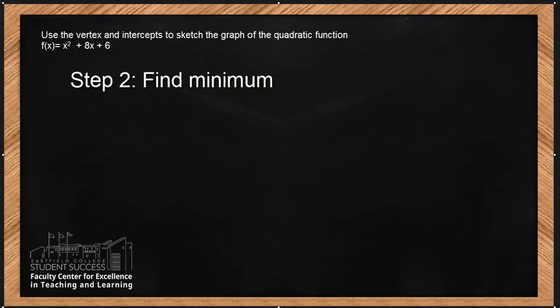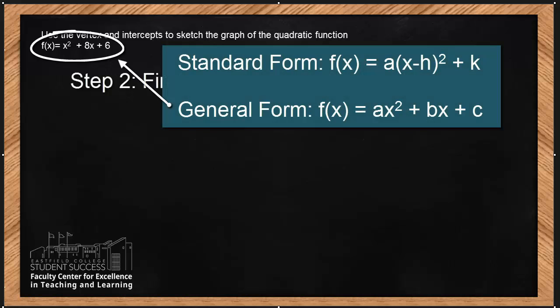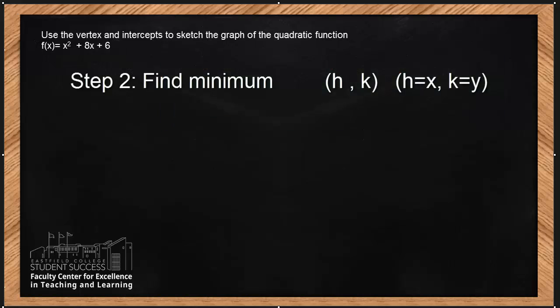The minimum is represented by h and k, where h is the x coordinate and k is the y coordinate. To find h, we need to go back to the function. Notice this function is written in general form. To find the vertex of the parabola in general form, here's the formula: h equals negative b divided by 2 times a. We need to find what is a and what is b. a is the leading coefficient, b is the coefficient in front of variable x. Our b is 8.